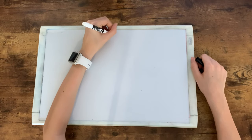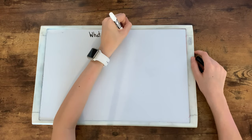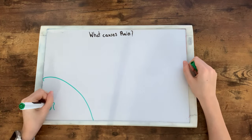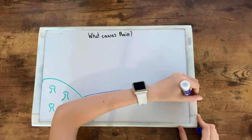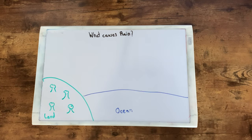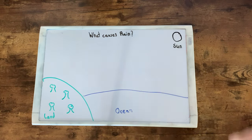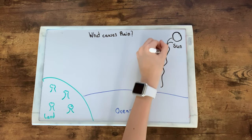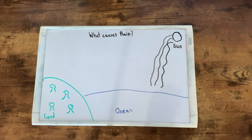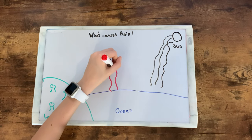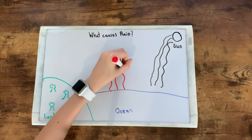Hi, my name is Brianna de Stoppeler, and today I'm going to show you what causes rain. First of all, we need land and the ocean, and most importantly, the sun. When the sun shines on the water, it heats and warms the water and turns it into an invisible gas called water vapor.